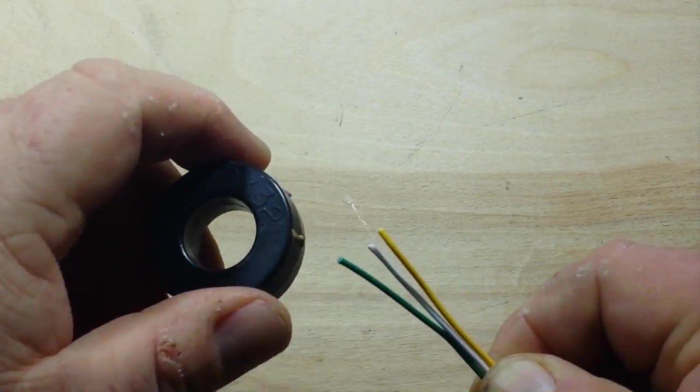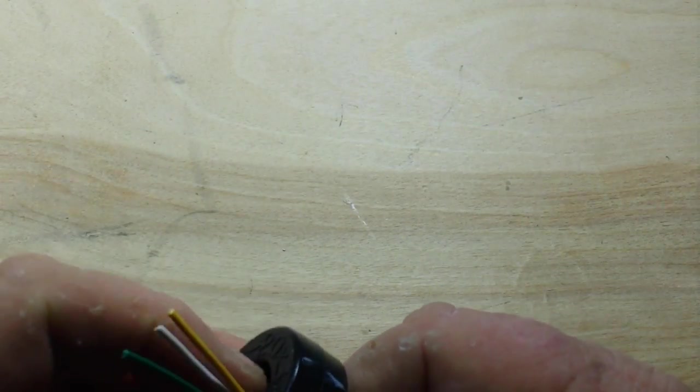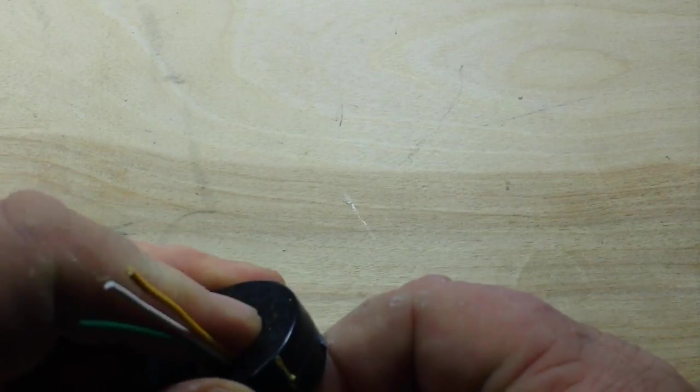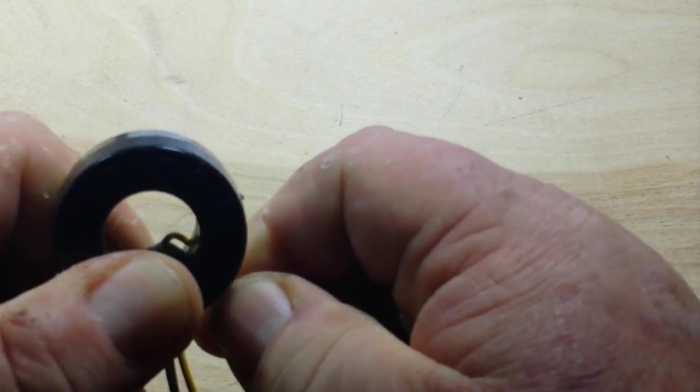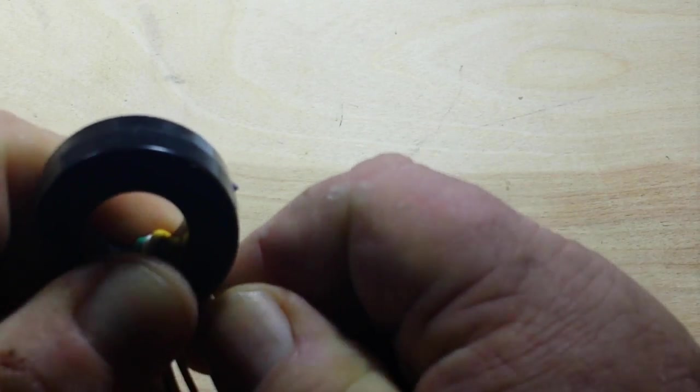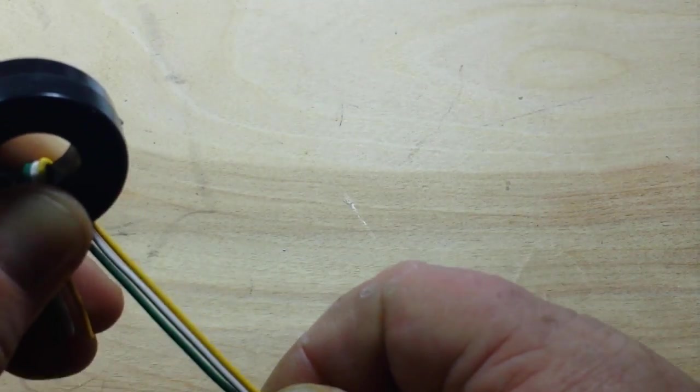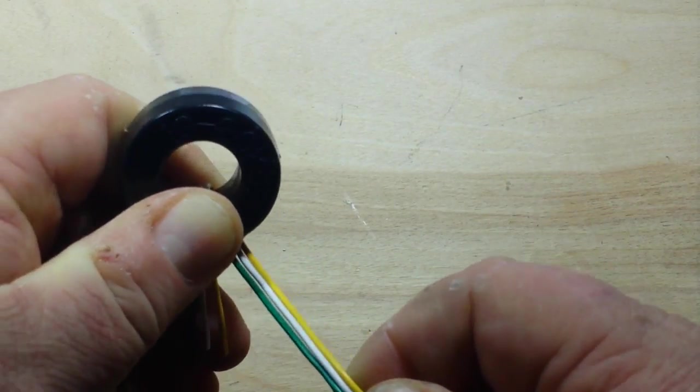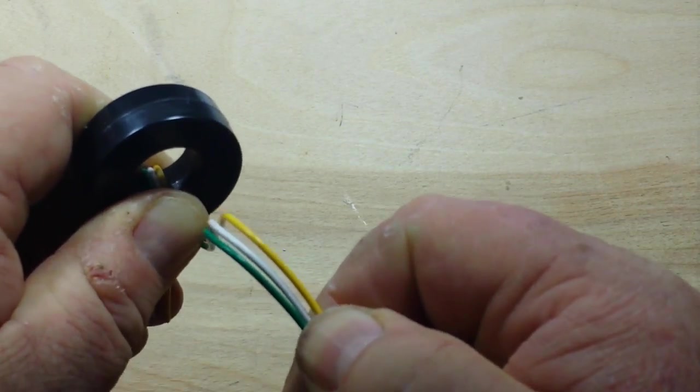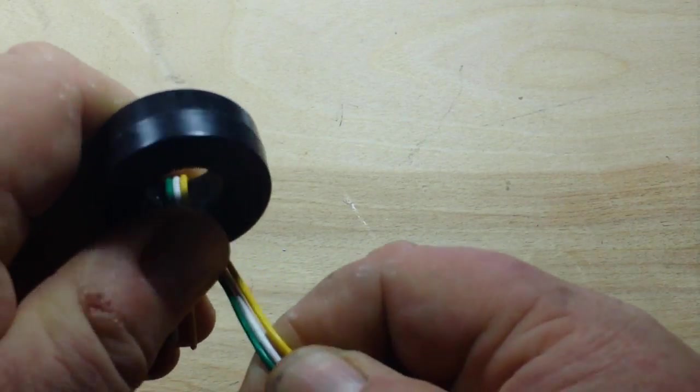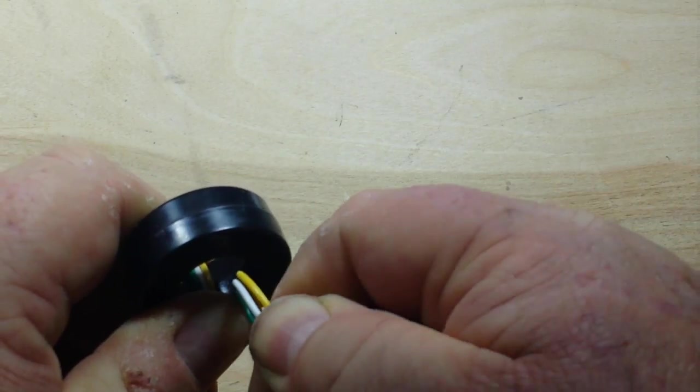And then we're going to start and wind our nine turns. You want to be very careful how you do this because we want the wires to remain in the same position—green, white, yellow. We don't want them switching around in any way.